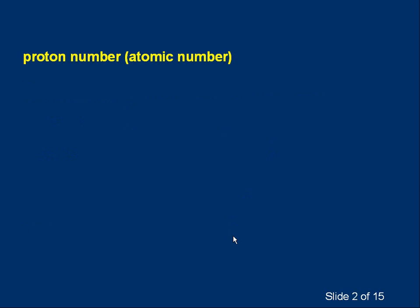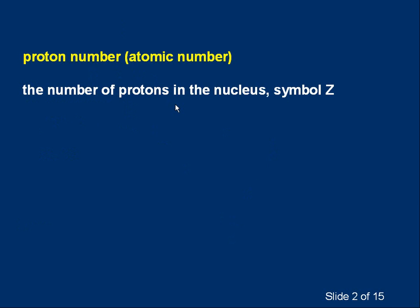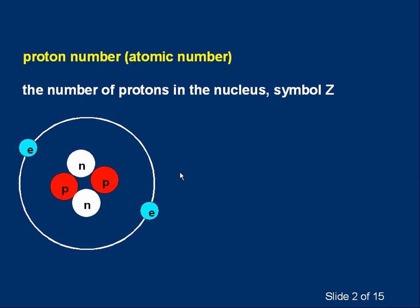Let's start with proton number, sometimes called atomic number. The two terms mean the same thing, and it's the number of protons in the nucleus of an atom. We give it the symbol capital Z. Here's a simple diagram of an atom — not to scale, just a representation. What do you think the atomic number is? Well, fairly obviously, there are two protons. The proton number, or the atomic number, is two. We can write Z equals two.